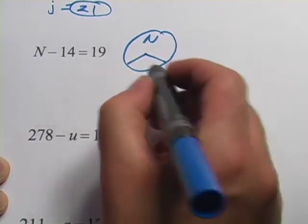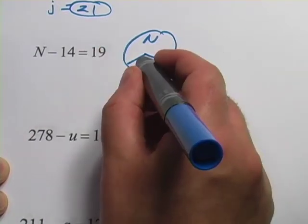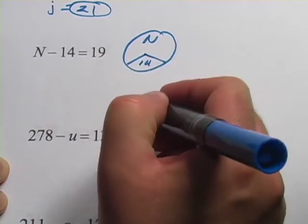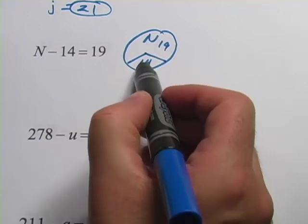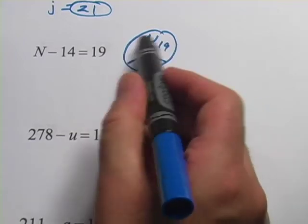That's 14 and if you were to take away that 14, it would leave 19 because N minus 14 equals 19. So the whole pie, the whole N is 19 and 14.